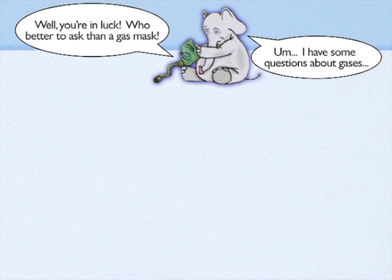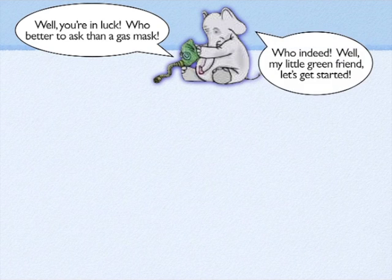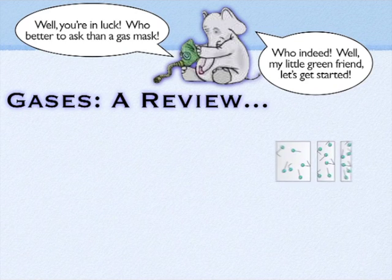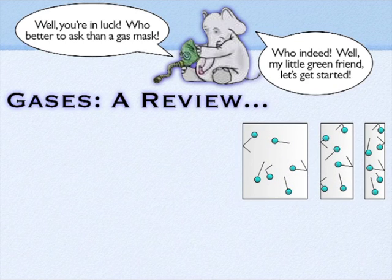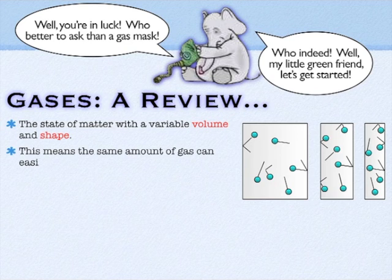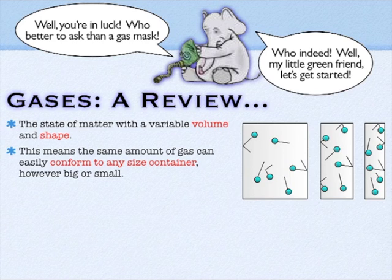Our new co-host — an elephant in a gas mask — would make a lot of sense here. So what do you probably already know about gases? You probably already know that gases are the state of matter with a variable shape and a variable volume, unlike solids that have a defined shape and volume, and liquids that have a defined volume but not shape. That's why crazy straws are so much fun.